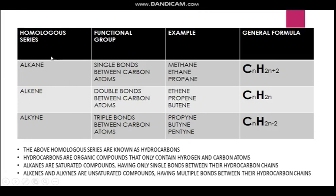These three - alkane, alkene, and alkyne - are collectively known as hydrocarbons, because they only consist of hydrogen and carbon atoms. Alkane is a saturated compound because of the single bonds between carbon atoms, as stated previously. Alkene and alkyne are unsaturated compounds because they have multiple bonds between carbon atoms - alkene has a double bond, alkyne has a triple bond.